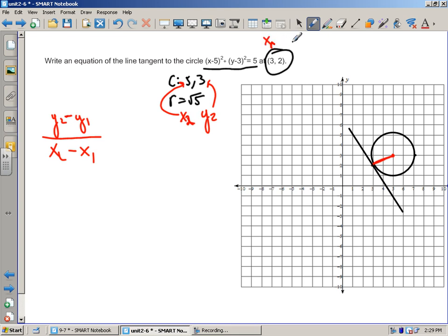So y2 was 3 minus y1 which was 2, over x2 which is 5 minus x1 which is 3, which gives me a slope of 3 minus 2 is 1, and 5 minus 3 is 2. So that is the slope of the radius, 1/2.